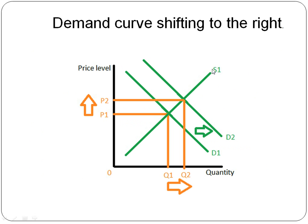Make sure supply is labeled up here. It's nice if you write S1, and then for demand you show D1 and D2 so you know which one is the second curve. So D1 to D2 — the second line is the second number. Incomes are increasing, people demand more Converse's. No matter what prices they charge, although prices are increasing, you're still going to demand more because your incomes are increasing too.